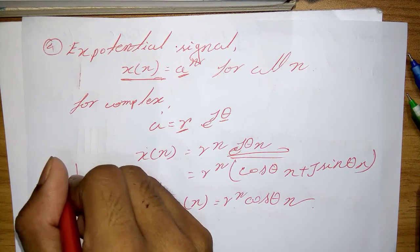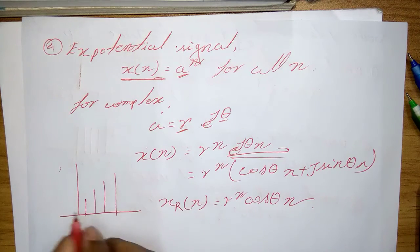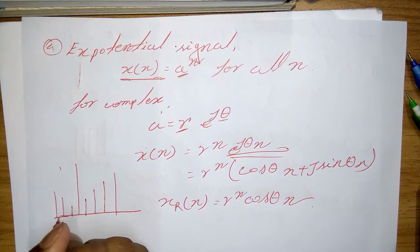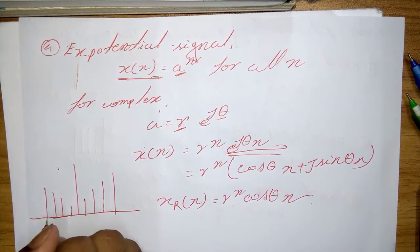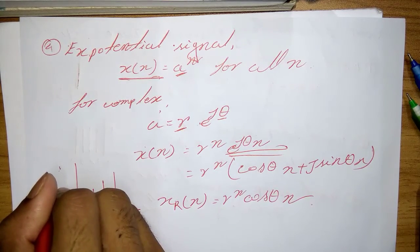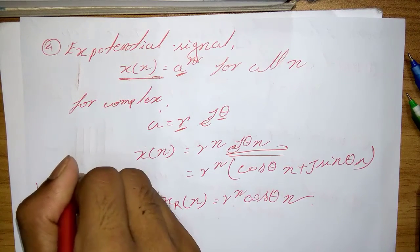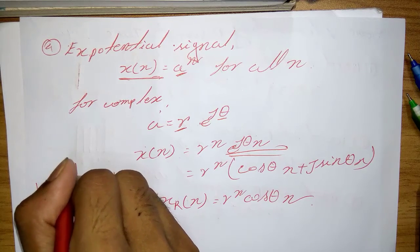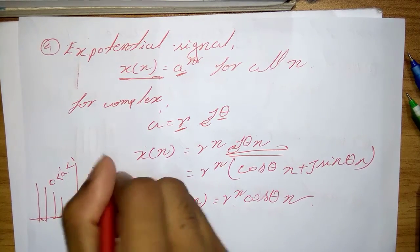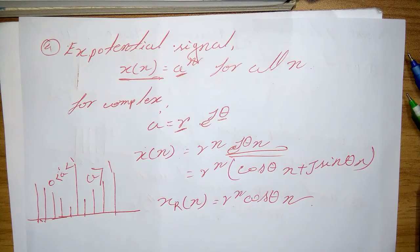So that's the exponential signal and its graphical value. Here, 0 is less than a is less than 1, and here a is greater than 1.